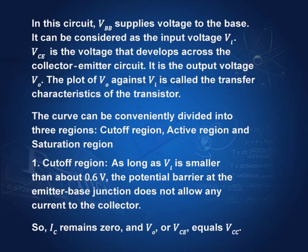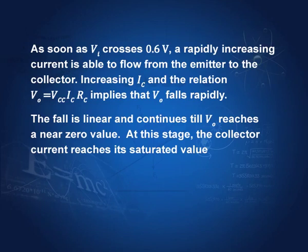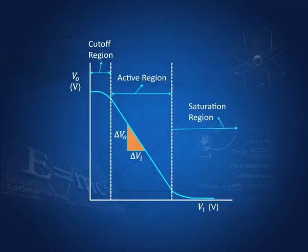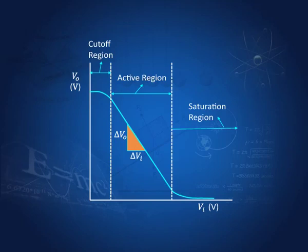The transfer characteristics curve can be conveniently divided into three regions. In the first region, there is hardly any current — it is the cutoff region, because the potential difference is not able to overcome the potential barrier in the emitter-base junction. In the third region, the current has become maximum and there is no change in the current, so this is the saturation region. In between is the active region.